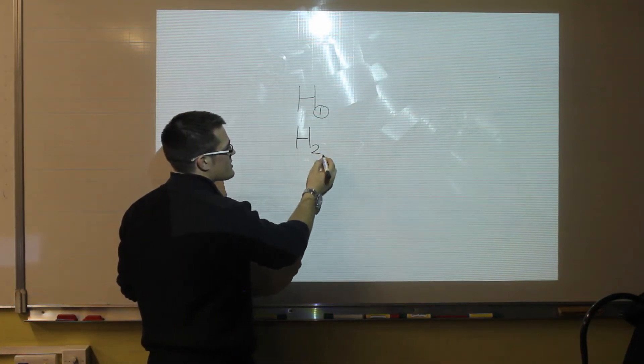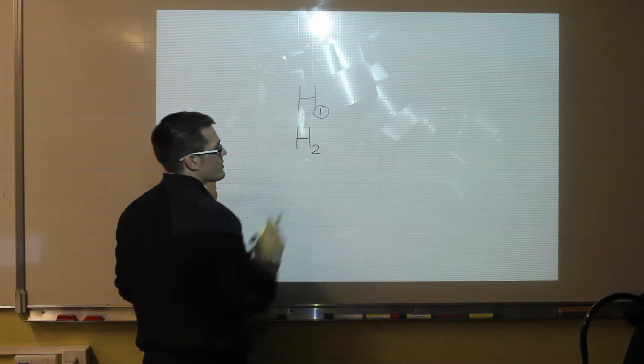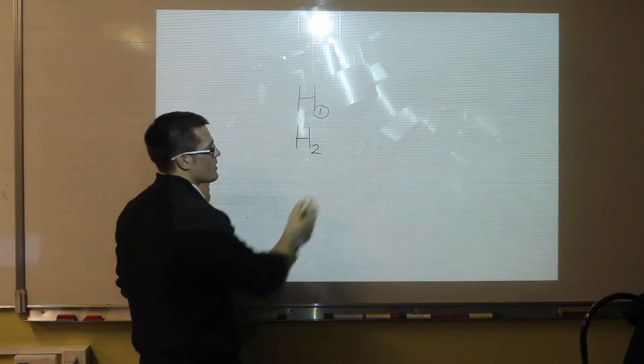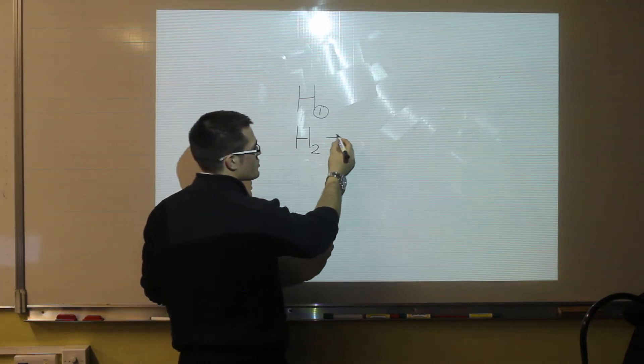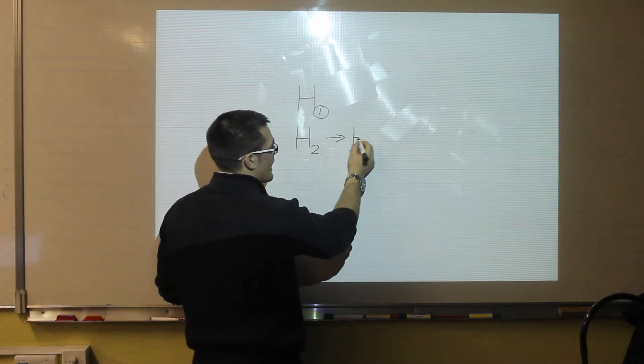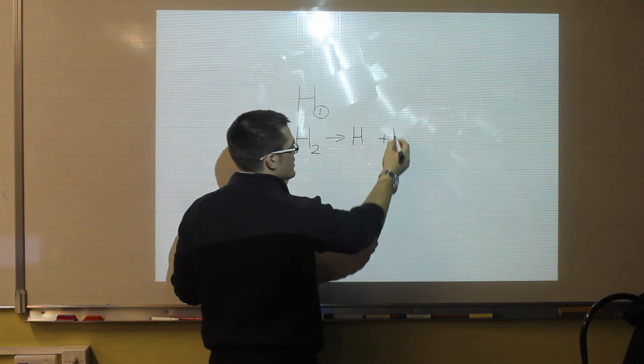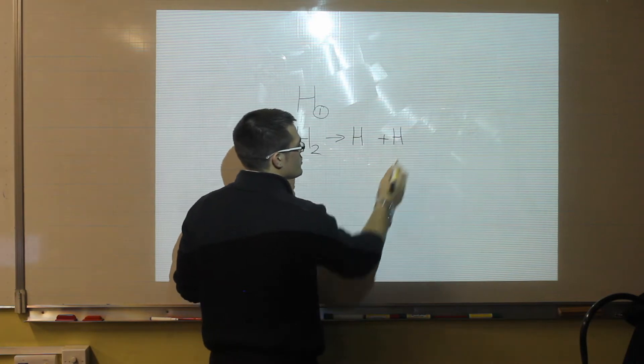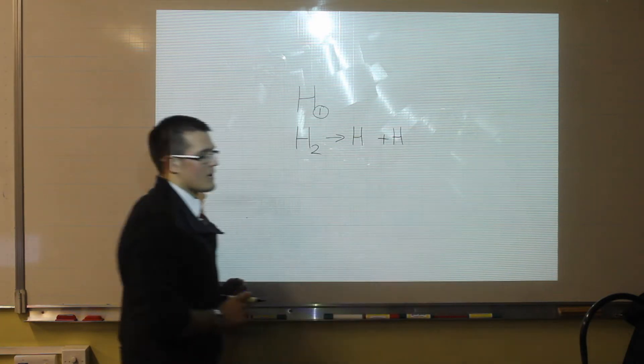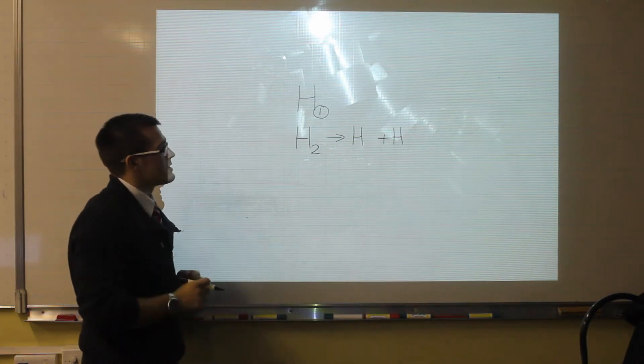If there is a number there, for example two, that means we have two atoms of hydrogen. So we have two individual atoms that are bonded together.